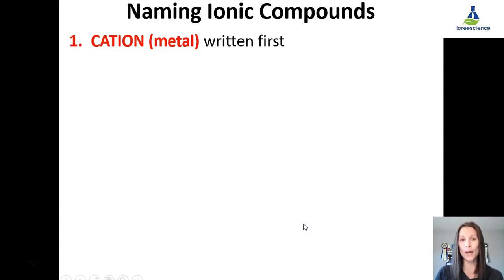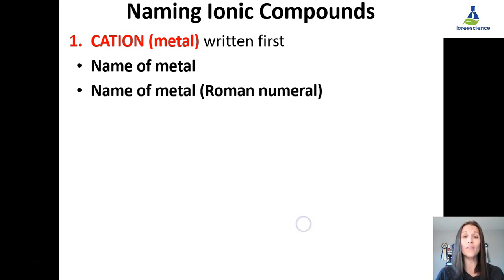How do we name compounds? The first thing you have to do, is you write your cation, or your metal, first. Think of it as going left to right across a periodic table. Whatever shows up on the left side of the periodic table, will also show up on the left side of your names. If it's just a metal, you write down the name of the metal.